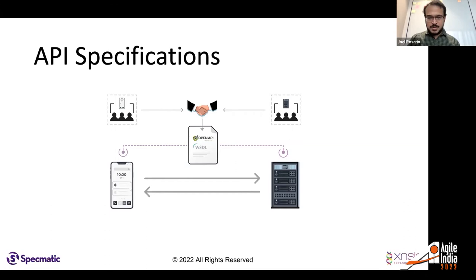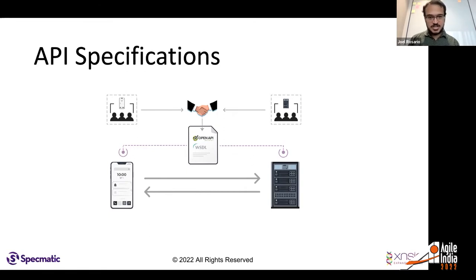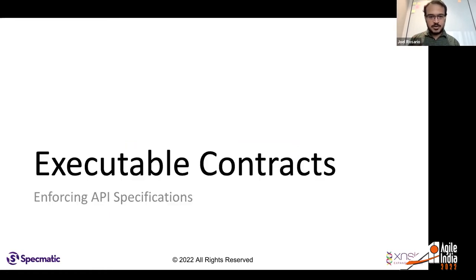An API specification is a step up, but it's still just a description. It doesn't force the provider to implement the API as per the specification, nor does it force the consumer to have the right expectations. We need something more — an executable contract that enforces the API specification.